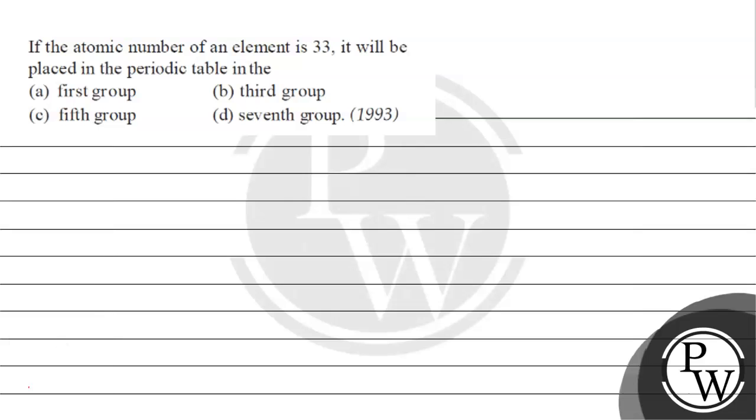Let's read this question. The question says if the atomic number of an element is 33, it will be placed in the periodic table in group first, third, fifth, or seventh group.